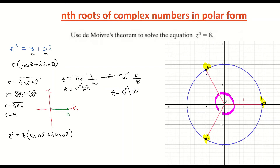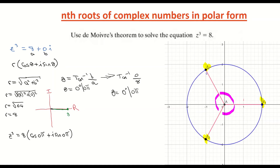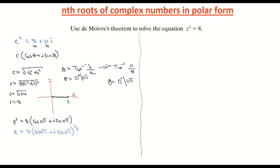Next, I want to eliminate the power of 3. Think of it like this: the cubed root of 8 is 2, which is the same as 8 to the power of 1/3. That's what the cubed root does — it applies the power of 1 over 3. So I raise both sides to the power of 1/3, giving z = [8(cos 0π + i sin 0π)]^(1/3). That's our complex number in polar form.